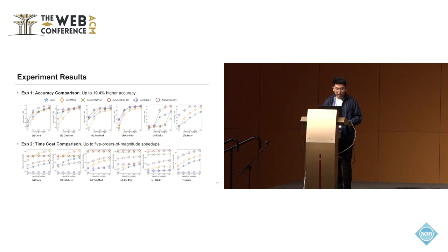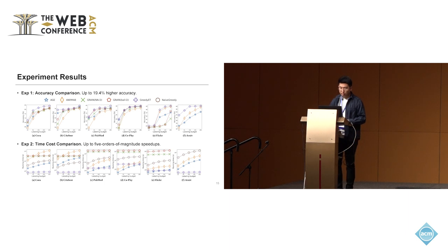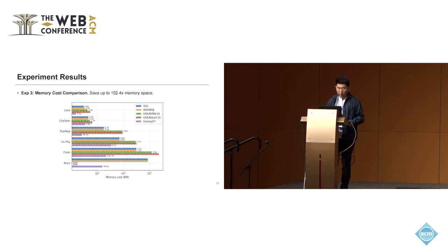For experiment results, we conduct six experiments. For accuracy comparisons, our method Greedy-ET achieves up to around 20% higher accuracy against the baselines. For time cost comparisons, it achieves up to five orders of magnitude speedup. For memory cost comparisons, our methods can save up to 100 times the memory space against the baselines.